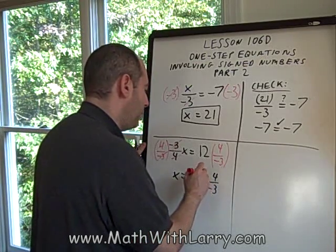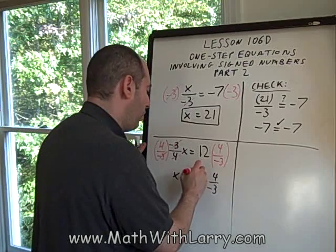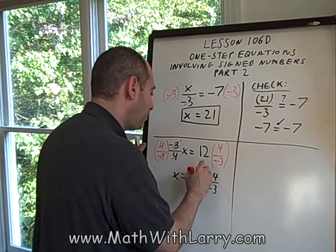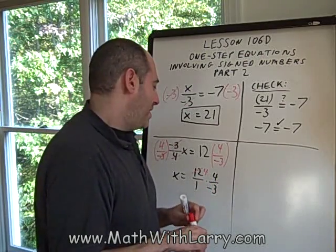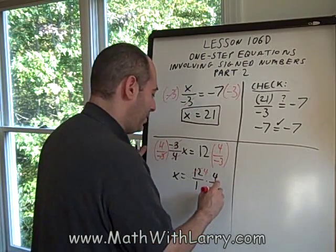Now watch how that works out. 3 goes into 12 four times, so I'm going to make that a 4. 3 goes into negative 3 negative 1 times. Make sure you see that.